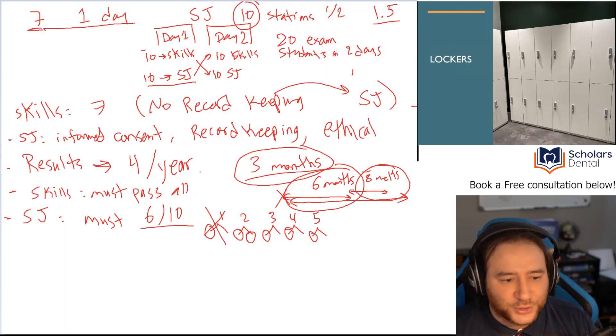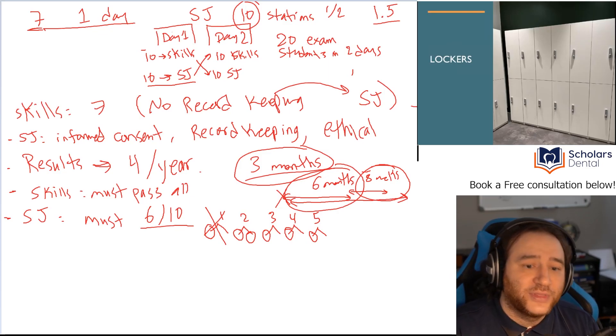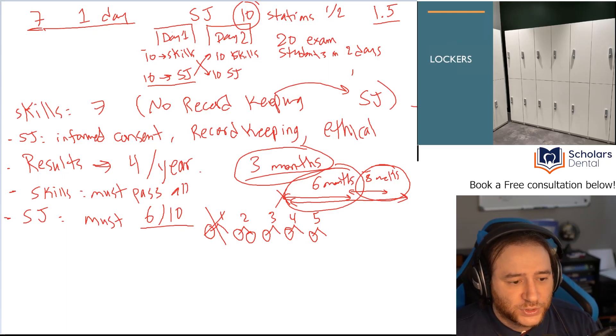And you're going to get lockers, so you can put your stuff in. You're going to get a disposable gown. They'll give you a disposable gown. They say you could wear professional street clothes or a scrub suit. I probably prefer wearing scrubs. There's going to be 10 examinees on any test day doing skills. Same time, there'll be 10 doing the SJ, the situational judgment. So a total of 20 students on site on a test day, 10 doing skills, and 10 doing SJ.